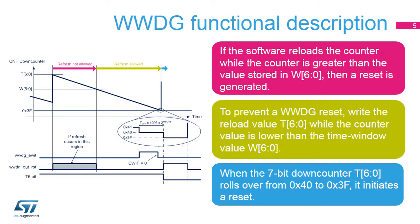This diagram illustrates how the window watchdog operates. When the 7-bit down counter rolls over from 0x40 to 0x3F, it initiates a reset. This happens if the application software does not refresh the window watchdog on time. The early wake-up interrupt, if enabled, can be generated when the down counter reaches 0x40.